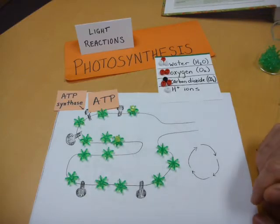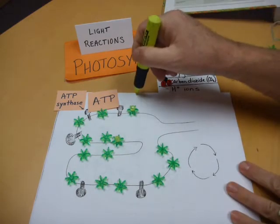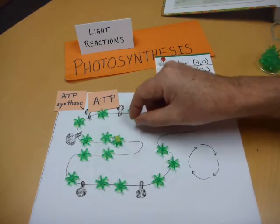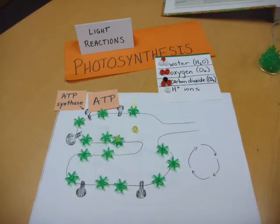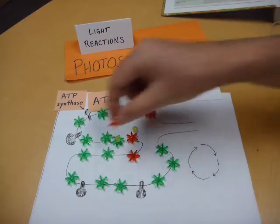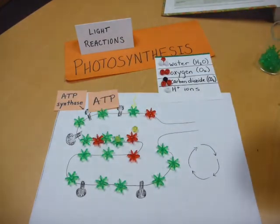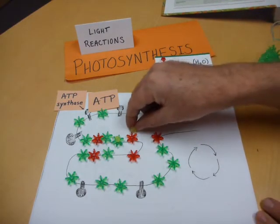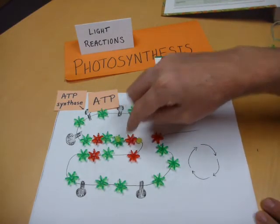Light comes in and strikes one of these chlorophyll molecules, which excites the electron. It's going to pass off into another complex system called the electron transport system, which is another series of proteins mostly found throughout those thylakoid membranes. Those electrons are going to drive this electron transport system.